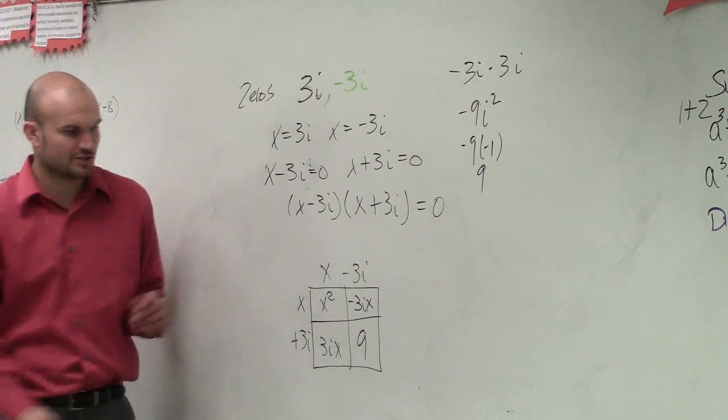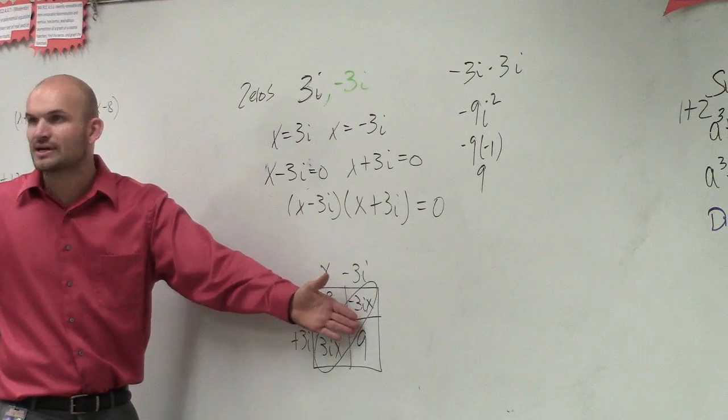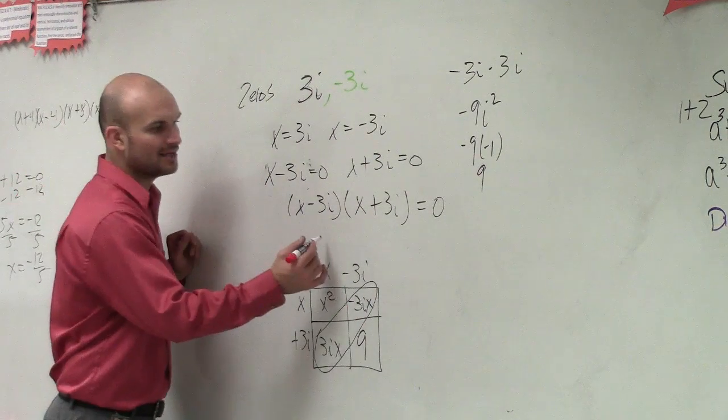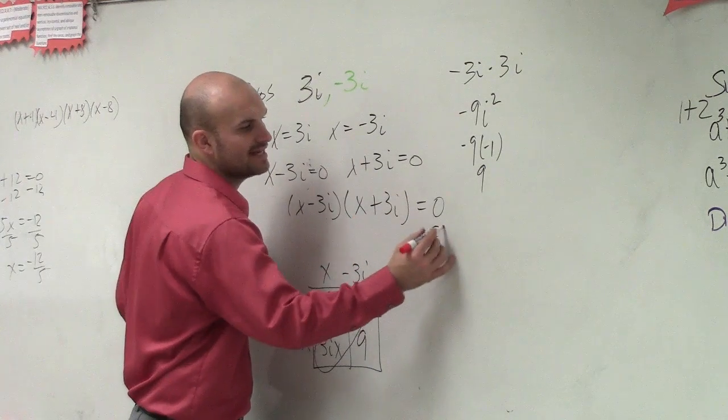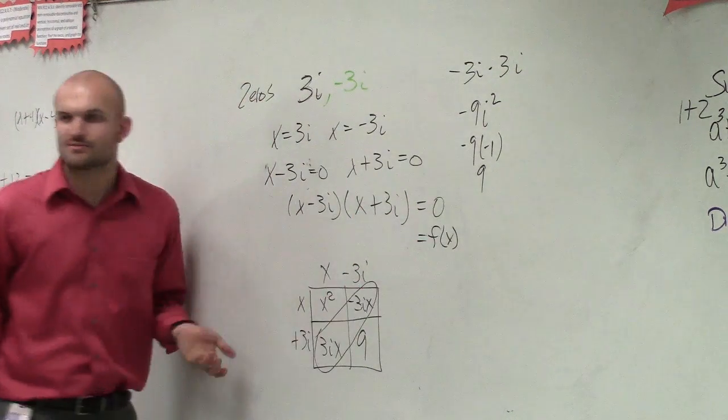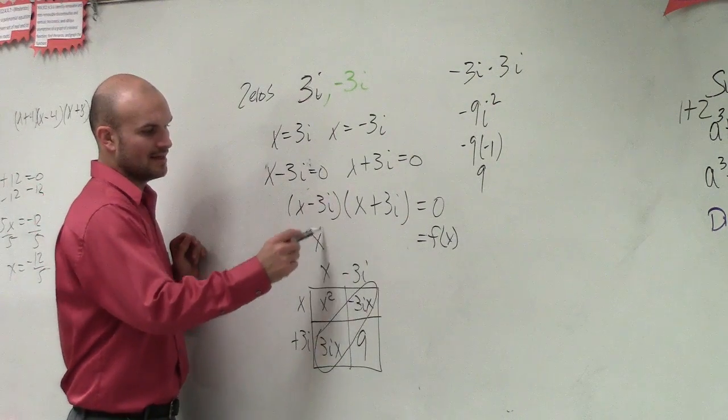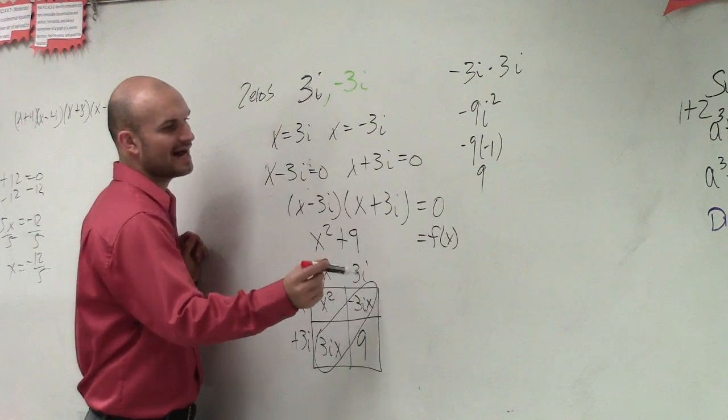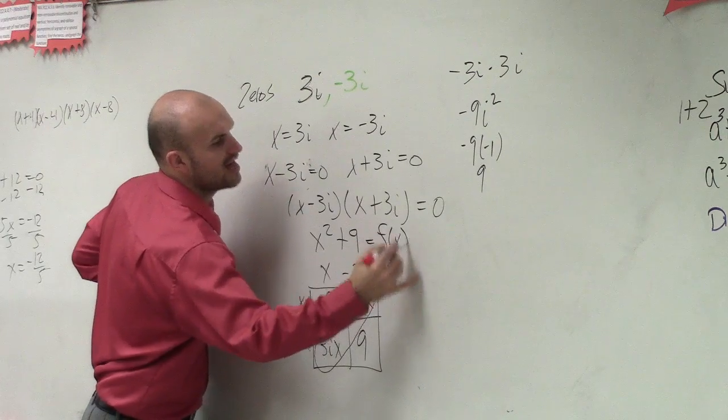Then, what you guys should notice are these two, like terms, are exact opposite to each other. So they're going to add up to zero. So our polynomial, rather than saying equals zero, we're going to say equals f of x, right? We'll call our polynomial f of x. So, therefore, I can now say that x squared plus 9 equals f of x.